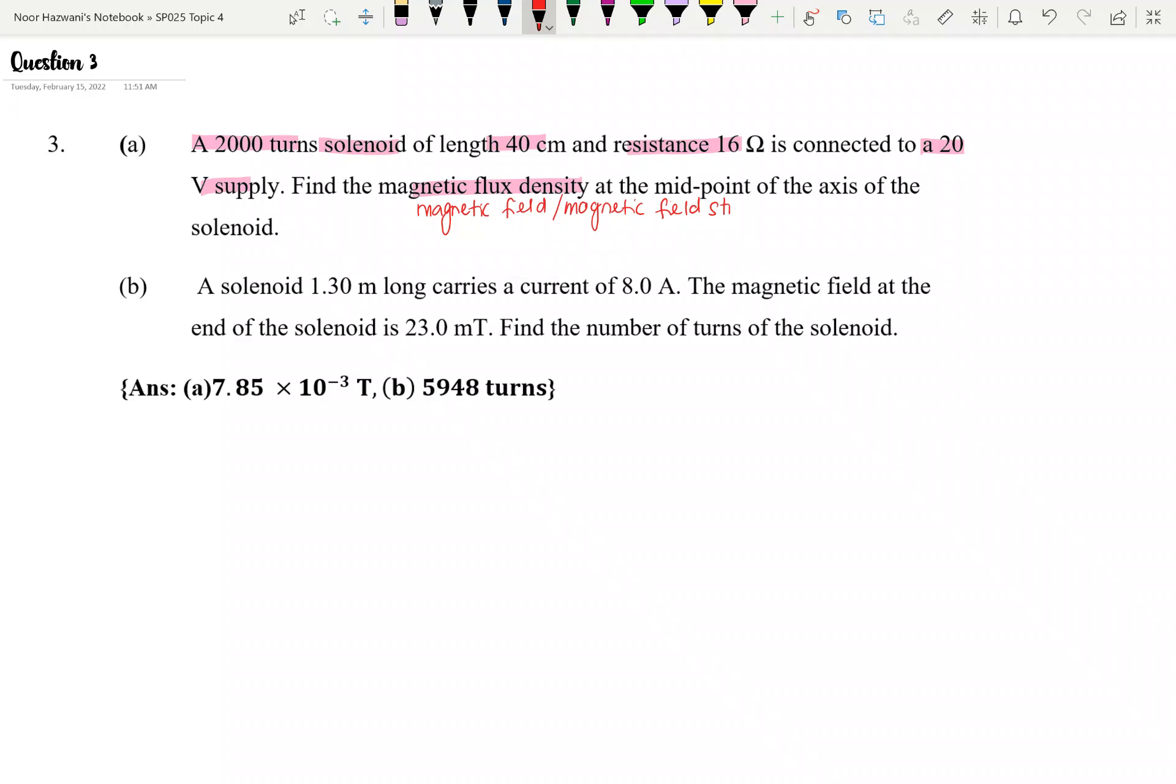Atau nama lain dia adalah magnetic field strength. So basically B lah sebenarnya, benda yang sama but then different names use. So it is actually B. It's asking to find the B at the midpoint of the axis of the solenoid. So soalan nak B pada center, midpoint to center of the solenoid lah.